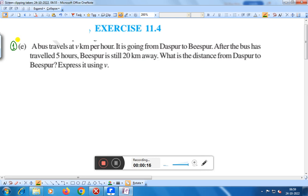A bus travels at V km per hour. It is going from Daspur to Bispur. After the bus has travelled 5 hours, Bispur is still 20 km away. What is the distance from Daspur to Bispur? Express it using V.